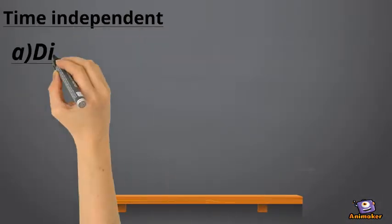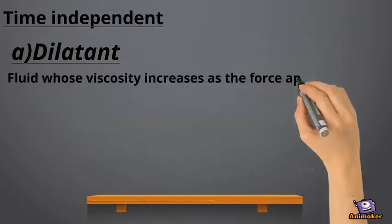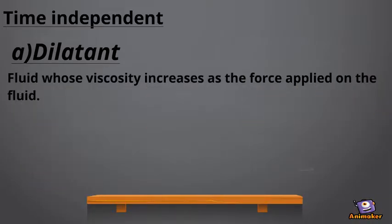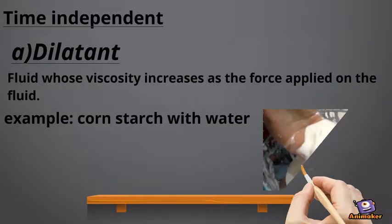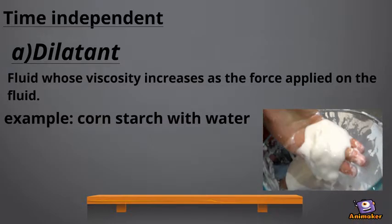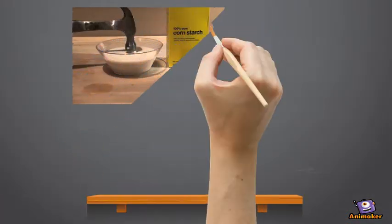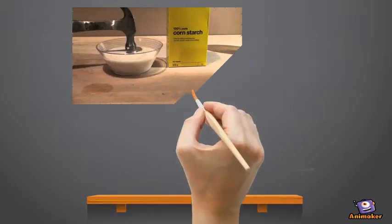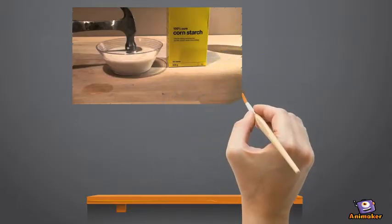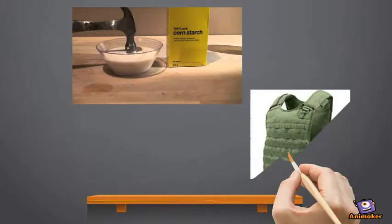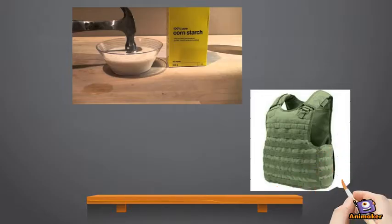Dilatant fluids: Viscosity increases as force is applied on the fluid. Examples are cornstarch with water. Mix cornstarch with water to make an oobleck paste and try to punch it and observe the results. We can see that oobleck becomes solid when struck; if left alone, it becomes liquid again. There is also research going on to make bulletproof jackets with this process.